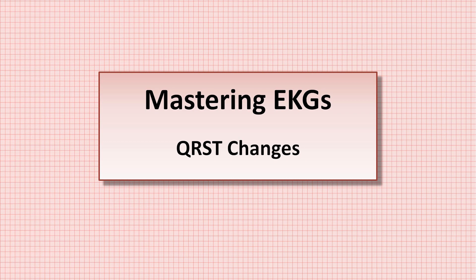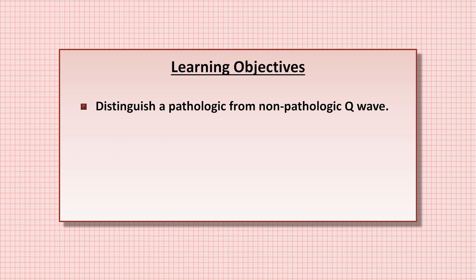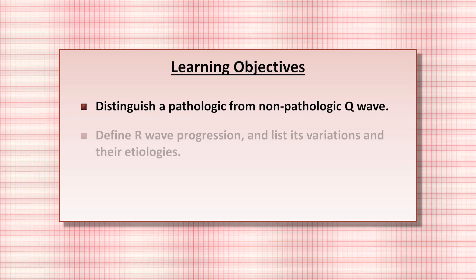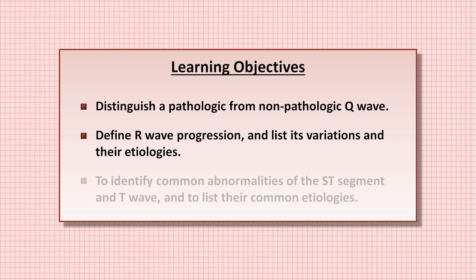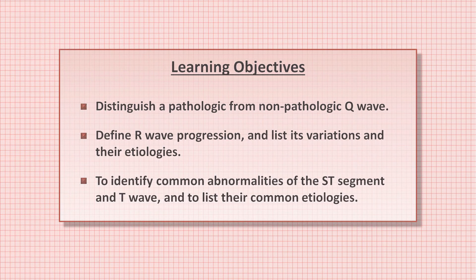In today's video, I'll be discussing a group of abnormalities that are frequently referred to collectively as QRST changes. The primary learning objectives will be: first, to distinguish a pathologic from non-pathologic Q-wave; second, to define R-wave progression and list its variations and their etiologies; and last, to identify common abnormalities of the ST segment and T-wave and to list their common etiologies.